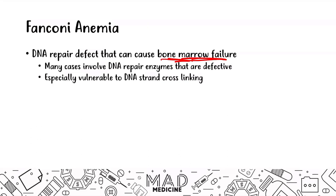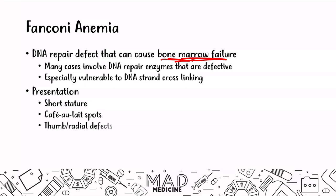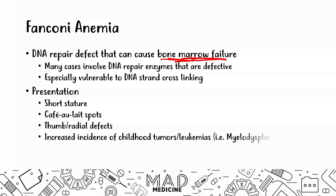The presentation of Fanconi anemia includes short stature, café-au-lait spots (hypopigmented spots on the body), thumb and radial deficits, and an increased incidence of childhood tumors such as leukemias, myelodysplastic syndromes, and squamous cell carcinoma of the head, neck, and vulva.